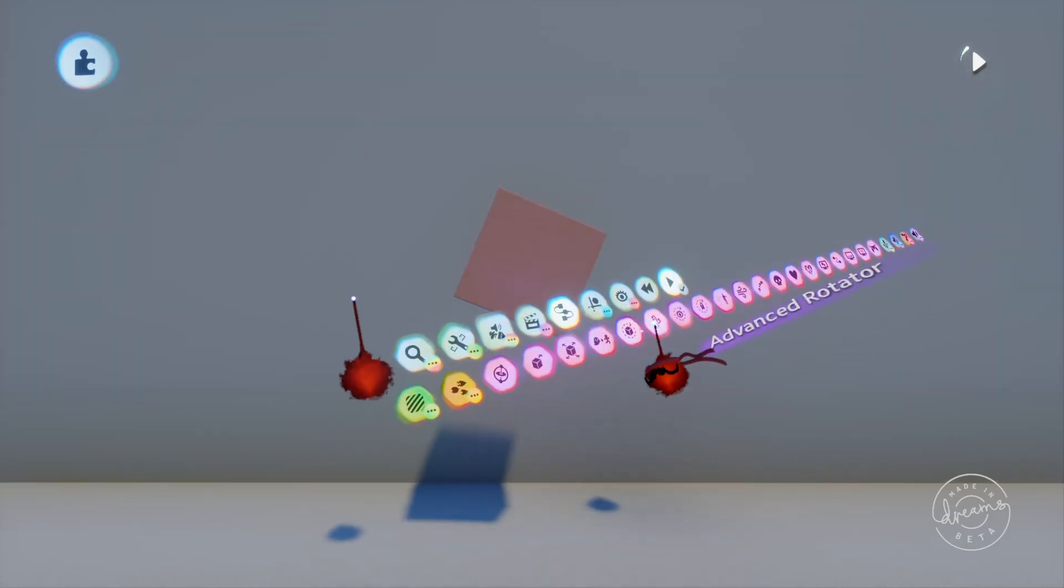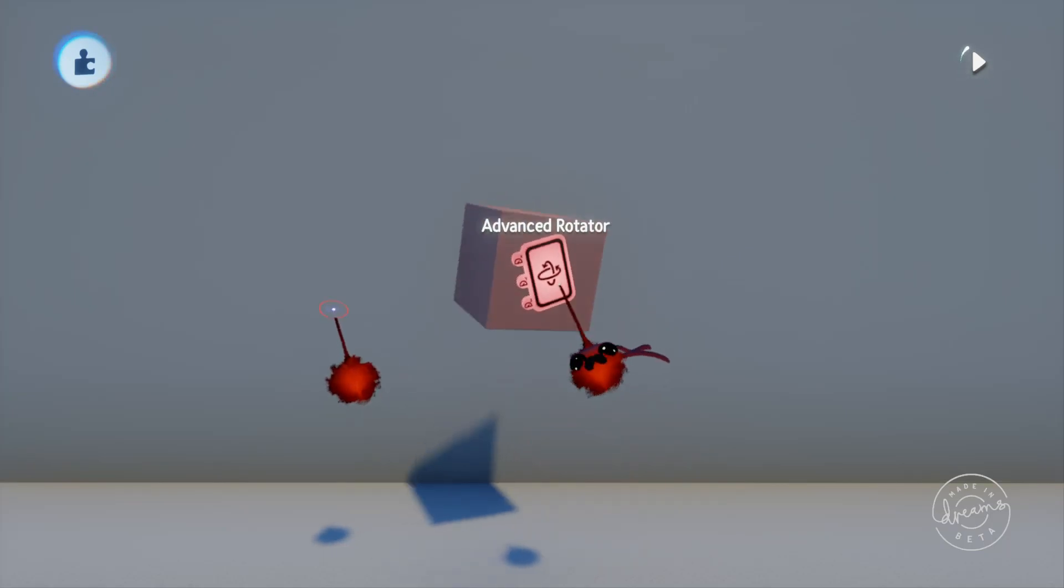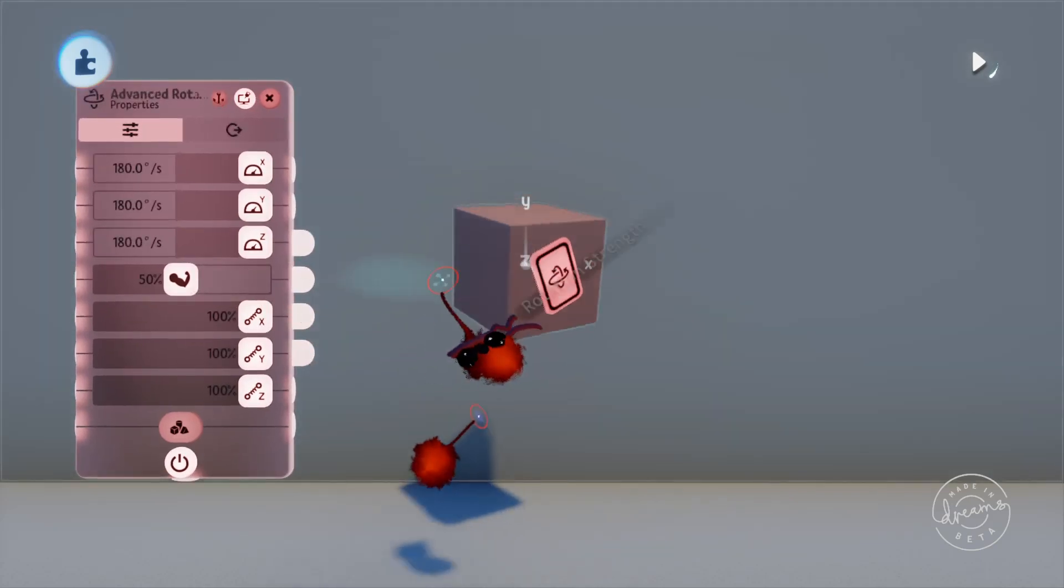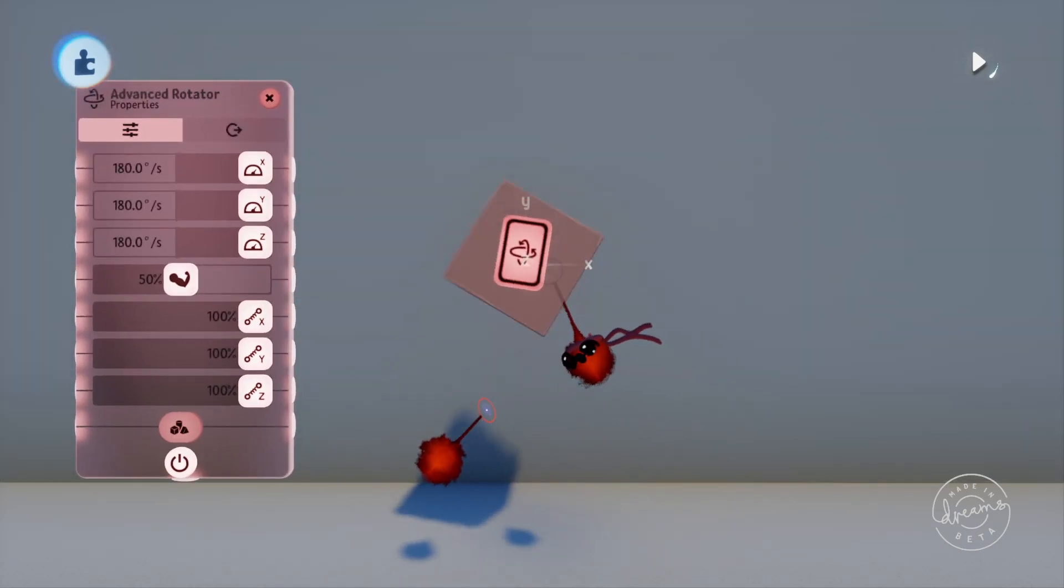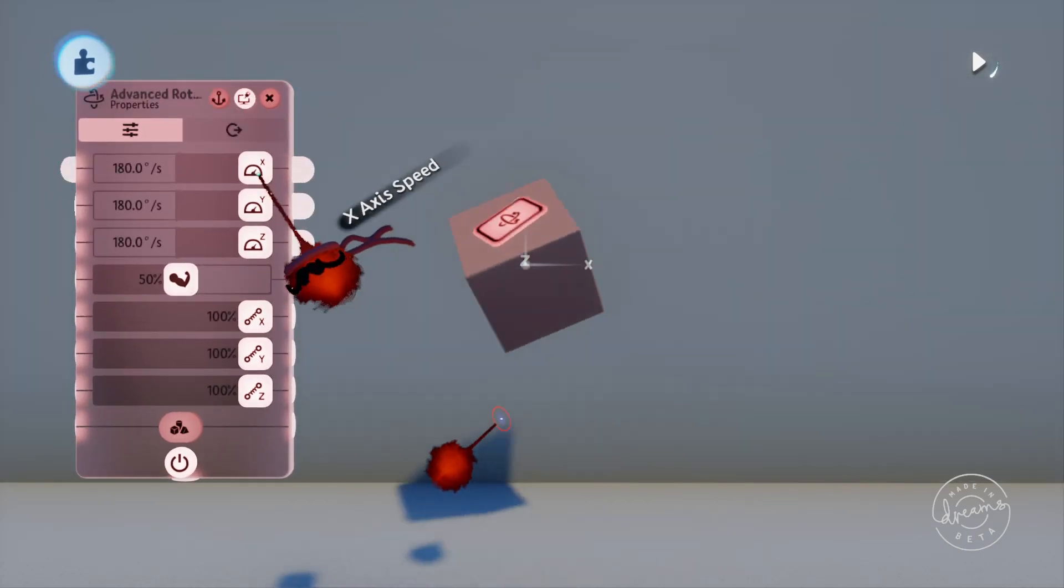We've also got the advanced rotator. This is very similar but you have more control over the rotation direction. If we pop into the tweak menu you can see that we've got individual speed and dampening sliders for each of the X, Y and Z axes.